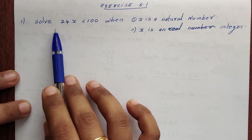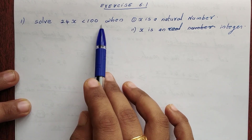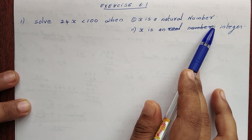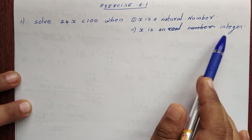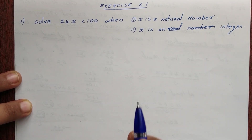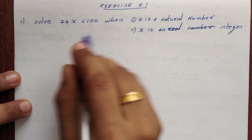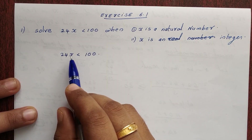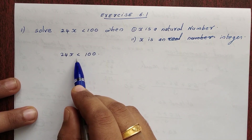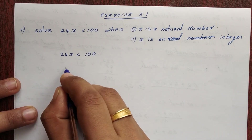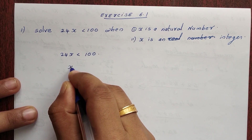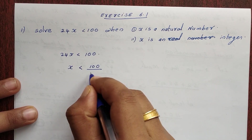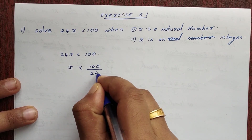Solve 24x less than 100, when (1) x is a natural number, and (2) x is an integer. We will solve the inequality: 24x < 100. Next step: x < 100 divided by 24.